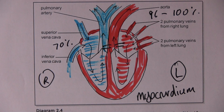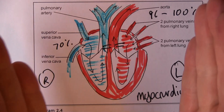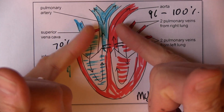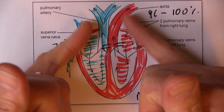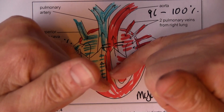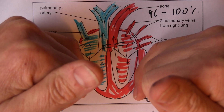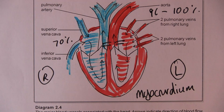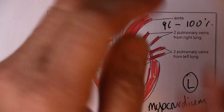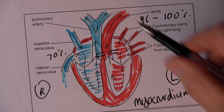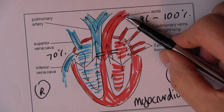The atria and the ventricles of the heart are contracting pretty well at the same time. The heart is coordinated, and it's interesting to think about what is actually being pumped out.